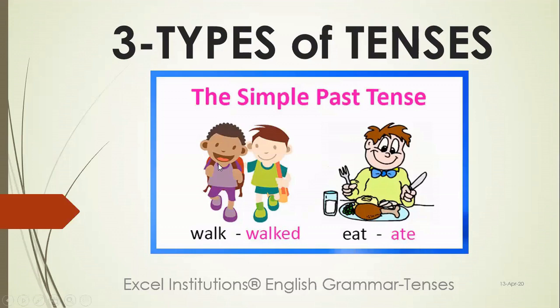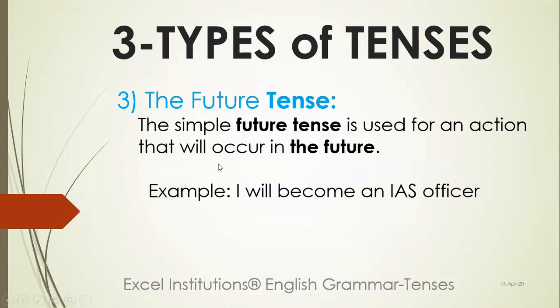Future tense refers to actions that will occur in the future. For example, tomorrow we will do something. Tomorrow Prerana may become an IAS officer, Nainika may become an IAS officer. Someone among you may become an IAS officer, become engineers, become doctors — it will happen in the future. So there are three types of tenses.